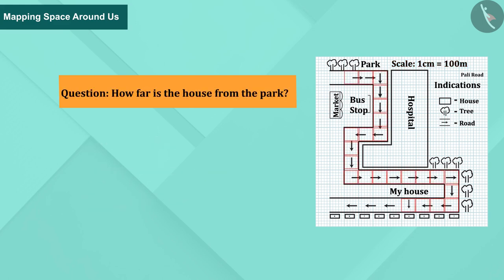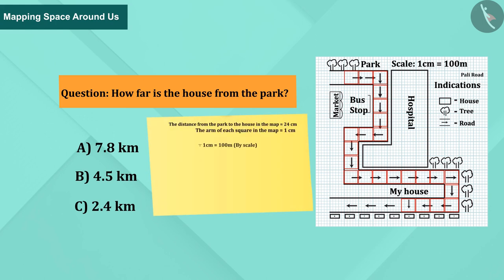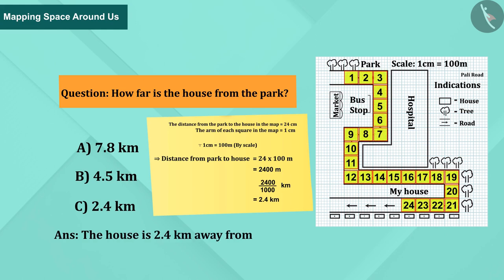Question: How far is the house from the park? A) 7.8 kilometers, B) 4.5 kilometers, or C) 2.4 kilometers. The house is 2.4 kilometers away from the park.